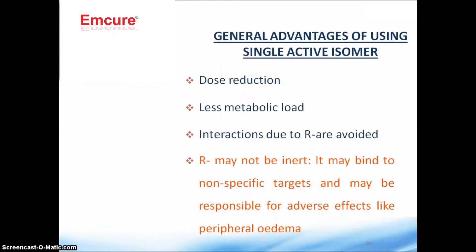The advantages of using a single active isomer include: a reduced dose, less metabolic load on the liver and kidneys, and less chance of interactions due to the R isomer. The R isomer may bind to non-specific targets and be responsible for adverse effects like peripheral edema. By using only the S isomer, those adverse events like peripheral edema will likely be reduced.